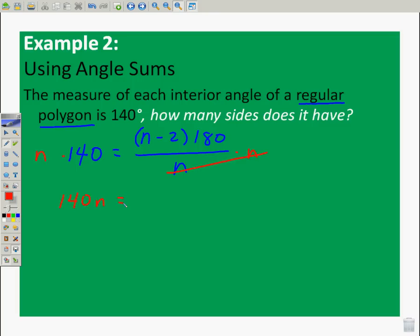What I'm going to do is multiply both sides by n. Because I want to get n out of the denominator. I have 140n equals n minus 2 times 180. And here's what I'm going to do. I'm going to divide by... Sorry, divide by 180. If I do this, what is going to happen? I'm going to have n minus 2 is equal to a fraction of n. It seems like a good idea.